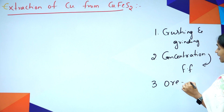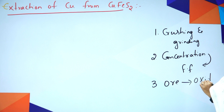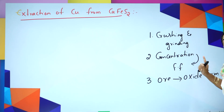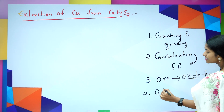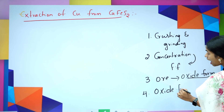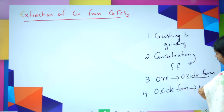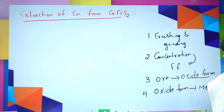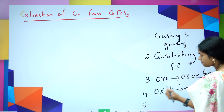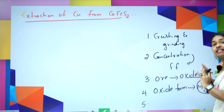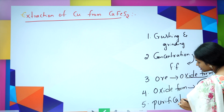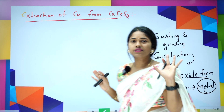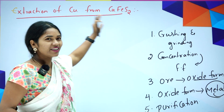The next step: whatever ore we got, we should convert it into oxide form. Why? Because reduction of oxide form is easy. So we convert the ore into oxide form. The next step is converting that oxide form into metal form through a step called reduction. That is the fourth step. The fifth step: whatever metal we got — that is impure metal — we should do purification. The entire chapter runs under these five segments.